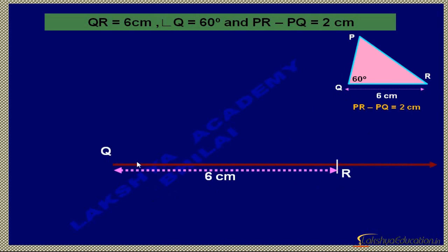Make an angle from Q measuring 60 degrees and draw a line. Name it QX. Point P will be on QX.